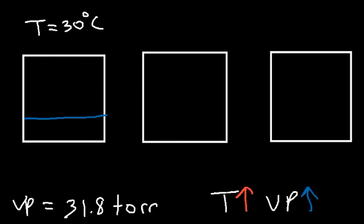The partial pressure of water can vary. The vapor pressure depends on the temperature, but the partial pressure of water depends on how much water vapor is actually in the air. Let's call these beakers A, B, and C. At beaker A, there's no water vapor in the air, so the partial pressure of water is zero.